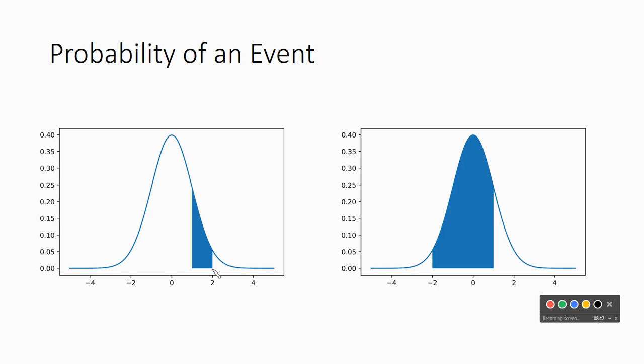We will have a function which will calculate what's called the cumulative probability. It will give us the probability from negative infinity all the way up to a given point. And so if I know the area up to here and the area up to here, I can subtract the small area from the big area, and that will give me the area under the curve and therefore our probability.